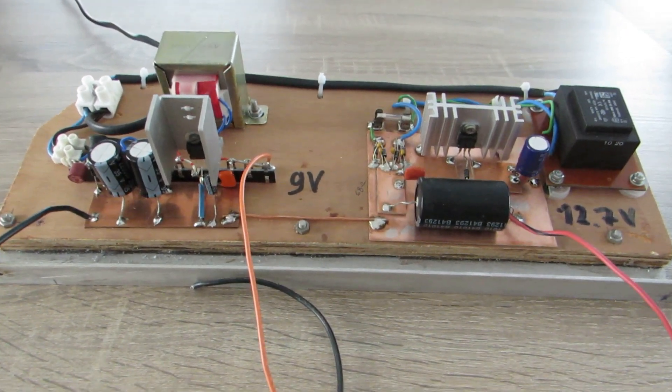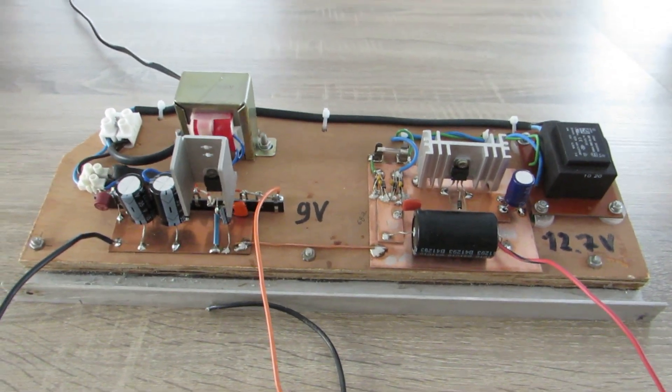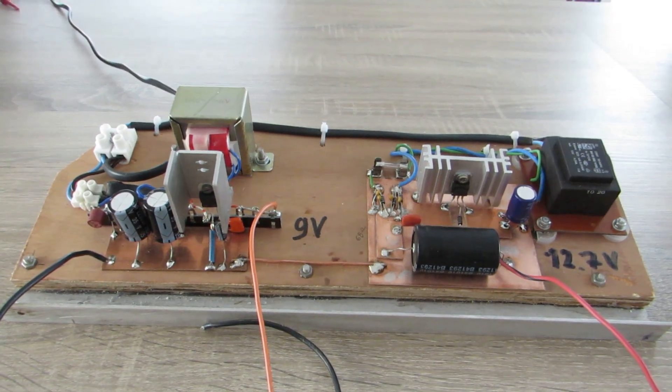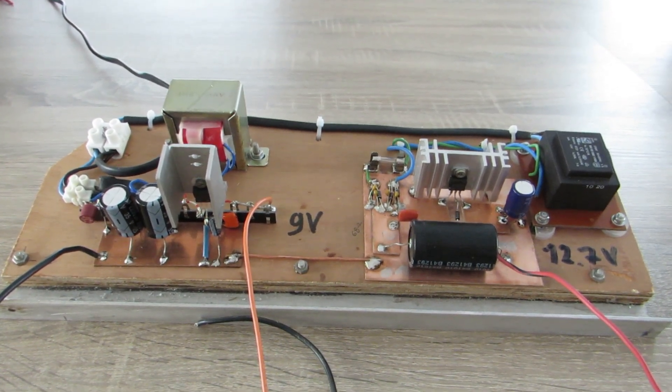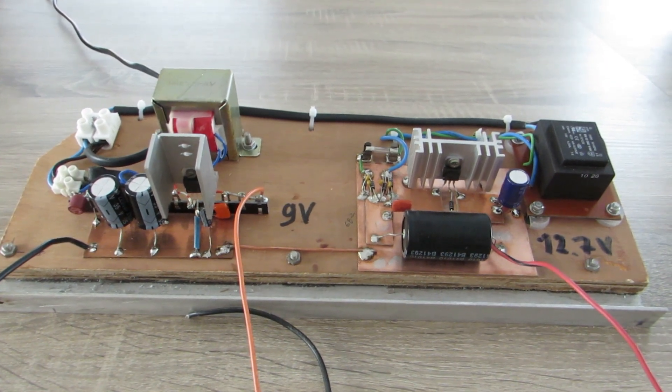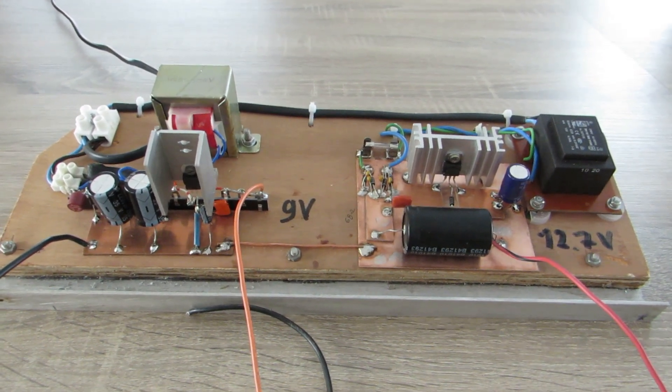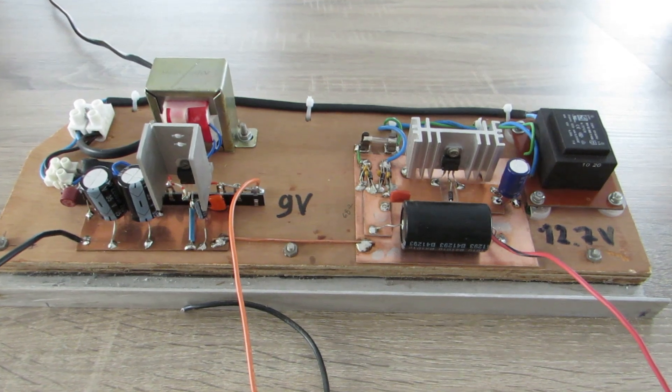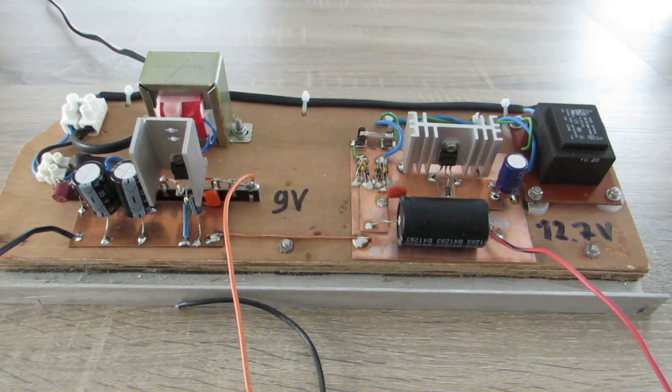Here you see the two separate power supplies, made in just the same way, both consisting of a bridge rectifier made with four diodes, type number 1N4007, followed by an electrolytic capacitor and finally the linear voltage regulator.